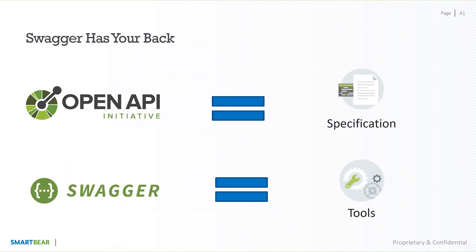Now Swagger is a broad suite of tools, ranging from open source tools like Swagger UI and Editor, to free tools like Swagger Inspector, and to commercial tools like SwaggerHub. We want to cater to a broader set of audiences and help accelerate your API development as best we can.